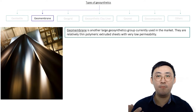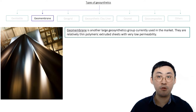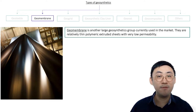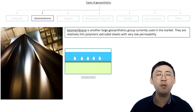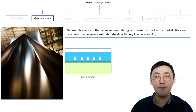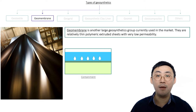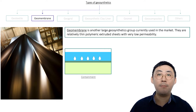The second type of geosynthetics is geomembrane, another large and widely used geosynthetics group. They are relatively thin polymeric extruded sheets with very low permeability, used as an impervious liner to contain liquid. They are commonly used in various environmental and hydraulic containment projects such as landfills, reservoirs, mining applications, and water ponds. Geomembrane serves one important function: containment.